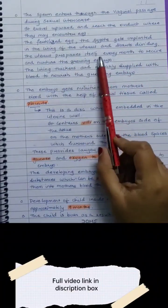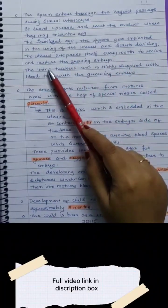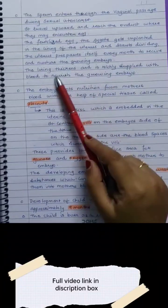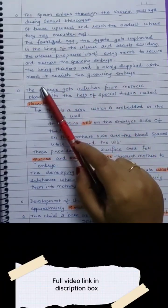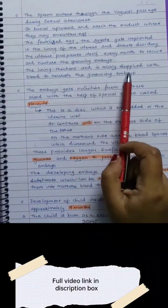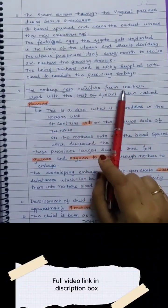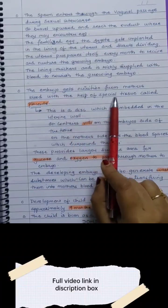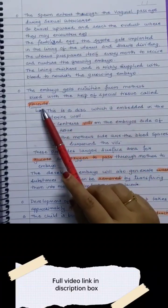The uterus prepares itself every month to receive and nurture the growing embryo. The lining thickens and is richly supplied with blood to nourish the growing embryo. The embryo gets nutrition from mother's blood with the help of a special tissue called placenta.